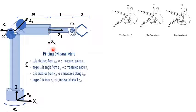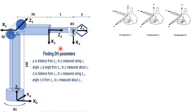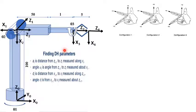X2 is not intersecting both Z2 and Z1, so we have to do something about it. For frame three, Z3 is pointing toward the right, and X3 is perpendicular to both Z2 and Z3, intersecting both. The last frame follows the previous one. For frame two, we shift the frame so that X2 now intersects both Z2 and Z3. The frame assignment is now complete.